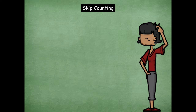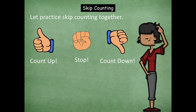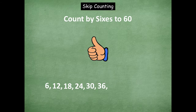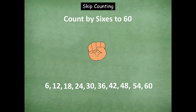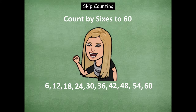Now let's go into our skip counting. We're going to practice skip counting together. Thumbs up means we're counting up, a fist means we're stopping, and thumbs down means we're counting down. We're going to start with sixes. Counting up: six, twelve, eighteen, twenty-four, thirty, thirty-six, forty-two, forty-eight, fifty-four, sixty. Now counting down: fifty-four, forty-eight, forty-two, thirty-six. Stop. Counting up: forty-two, forty-eight, fifty-four, sixty. Good job with skip counting by sixes, friends!